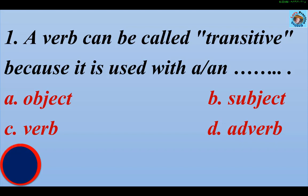A verb can be called transitive because it is used with an object.